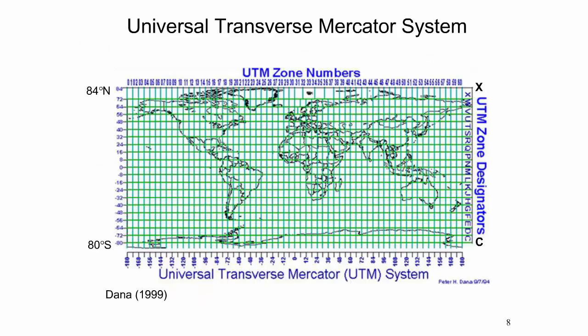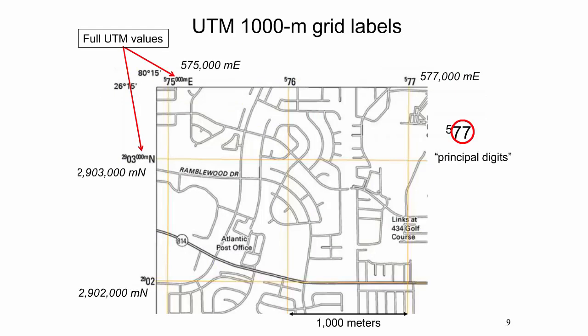In the UTM grid system, the area between 84 degrees north and 80 degrees south employs a series of 60 longitudinal zones covering the whole world, numbered 1 to 60 from west to east. Each zone is 6 degrees wide in longitude, with a few exceptions north of 56 degrees latitude, and uses the transverse Mercator projection. There are 20 latitudinal bands spanning 80 degrees south to 84 degrees north, denoted by letters C to X omitting I and O, each extending 8 degrees in latitude except band X which extends 12 degrees. U.S. topo maps include a 1,000 meter UTM grid drawn and labeled in conformance with the U.S. National Grid standard.